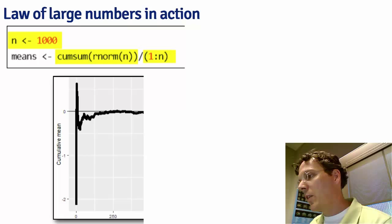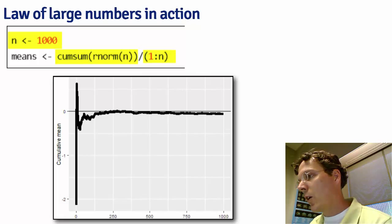What you see when you plot the cumulative means by the index is early on there's a lot of variability in the mean, but then as the number of simulations goes on, we get closer and closer to the true population value, which is 0.